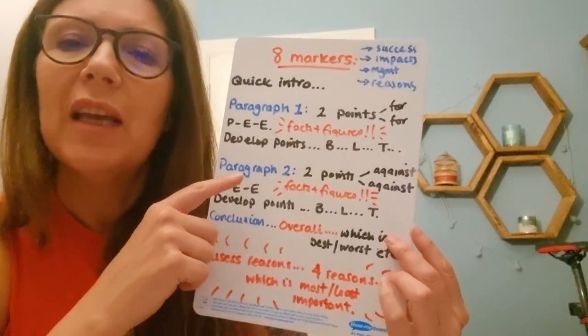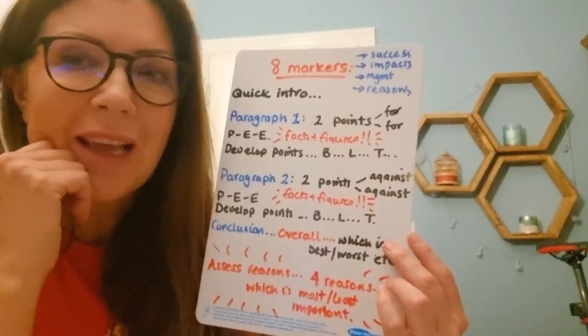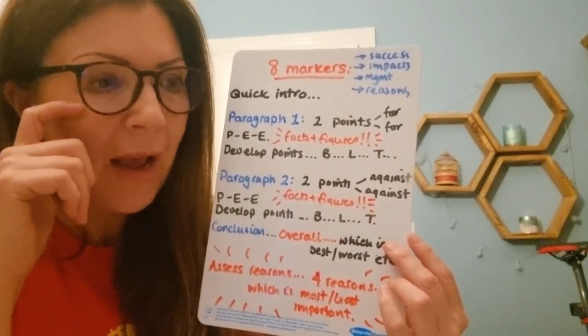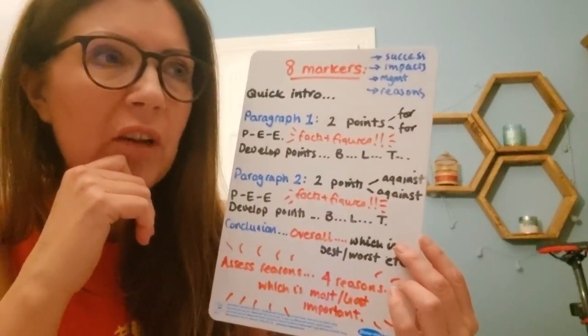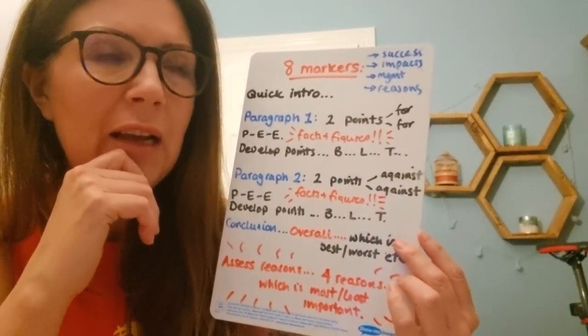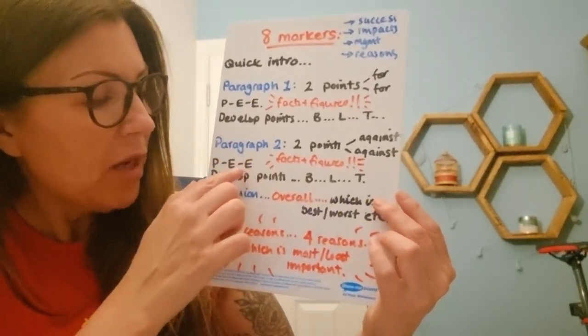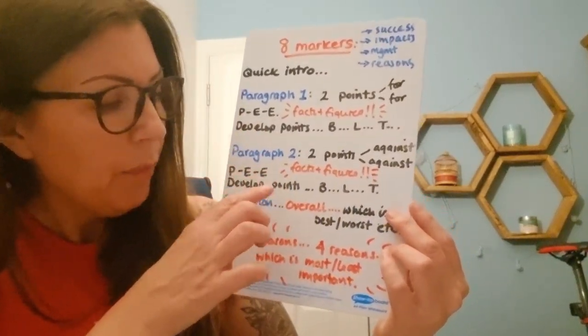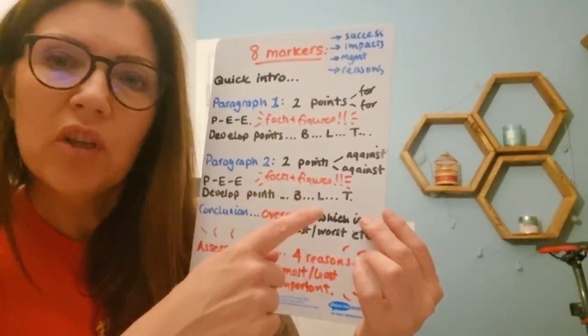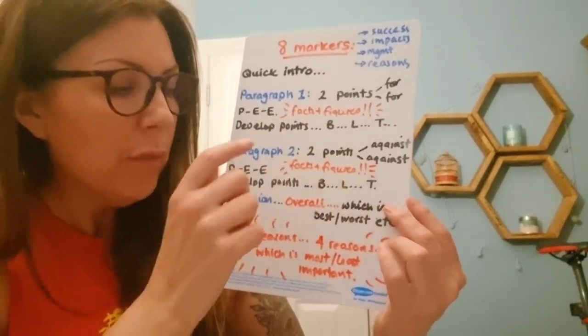Your paragraph two is your cons or the points against. So again, the points, maybe two points against the Sardar-Sarabar dam, why it's bad, it destroys the environment, or it's not very good for developing the economies of rural areas, for example. Again, make sure you use PEE structure, point, explain, evidence, or point evidence, explain, and make sure you develop your points using maybe BLT or some other connectors. So they're the main two paragraphs.